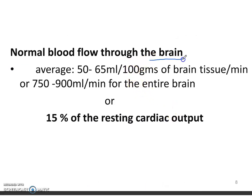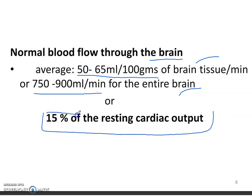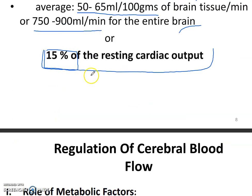Normal blood flow to the brain averages 50 to 65 milliliters per 100 grams of brain tissue per minute, or 750 to 900 milliliters per minute for the entire brain. We can also calculate this as a percentage of total resting cardiac output, which is 15% — meaning 15% of the resting cardiac output goes to the brain when the person is at rest.